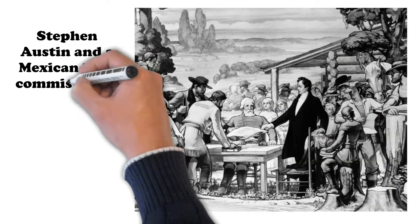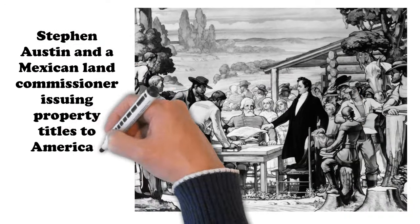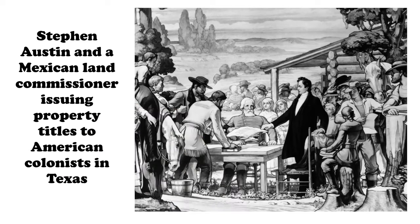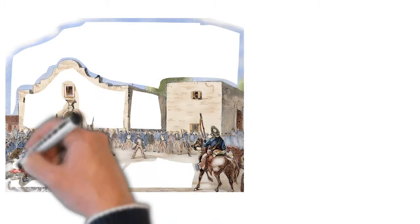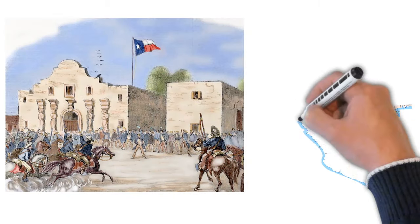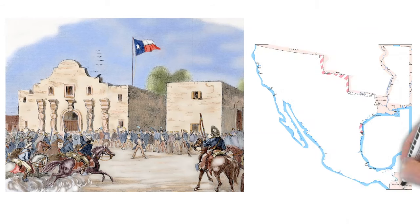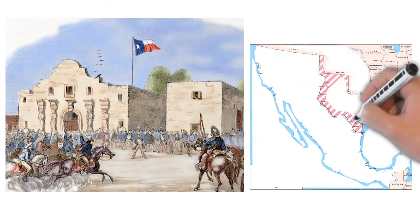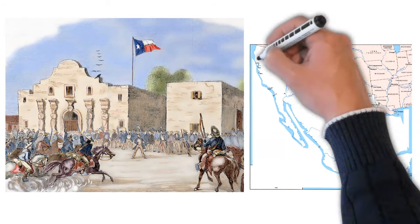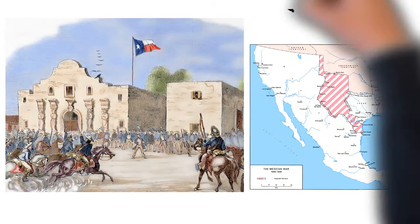This backfired, as the newcomers — upset at the decentralization of the Mexican government and its cracking down on slavery — rebelled along with some Tejanos against the Mexican government. They succeeded, and in 1836 Texas declared itself a republic. Mexico refused to recognize it, but what really prompted the continued conflict was that Texas claimed its territory extended all the way to the origins of the Rio Grande.